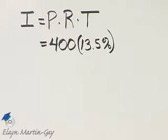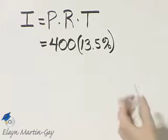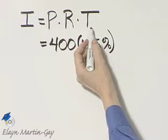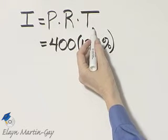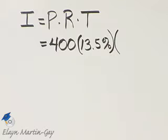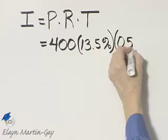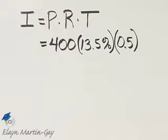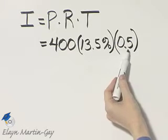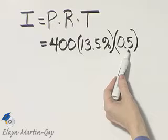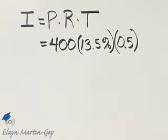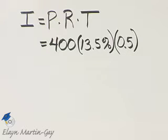It's six months. Time here is in years, so what part of a whole year is six months? It's one-half of a year, so you can write down one-half or as a decimal, 0.5. Once again, that's because we're interested in one-half of a year or six months. So my time is 0.5 or one-half.